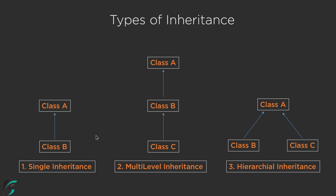Whatever class you see here — such as class B and class C — are actually known as the subclass or child class. And whatever class you see as class A, or class B in the multi-level example, are actually known as the parent class, superclass, or base class. In multi-level inheritance, class B is actually acting as a parent class for class C, but the same class B is actually acting as a child class for class A. So these are just relatively related to each other as child and parent.